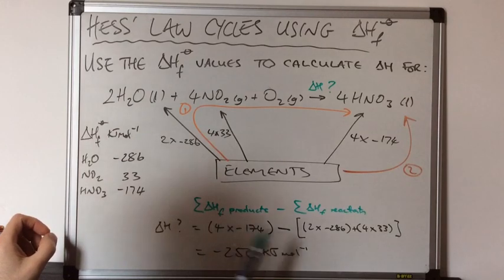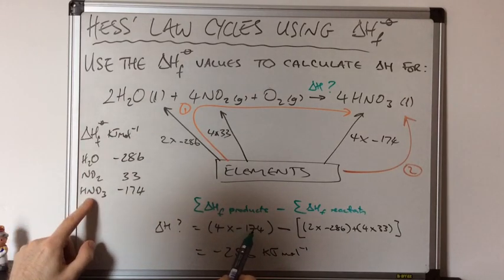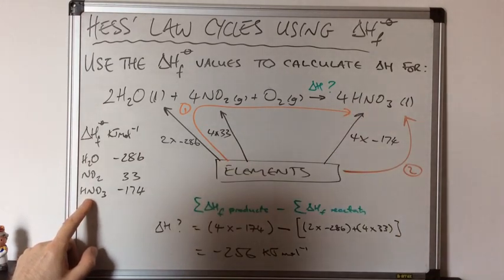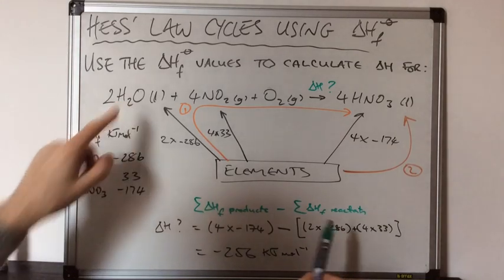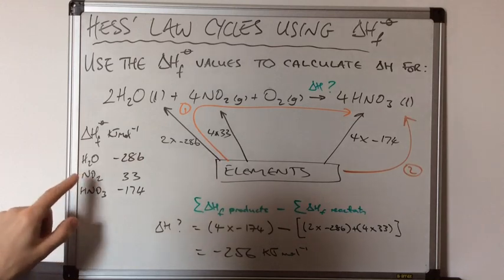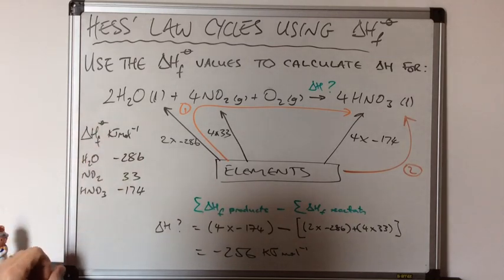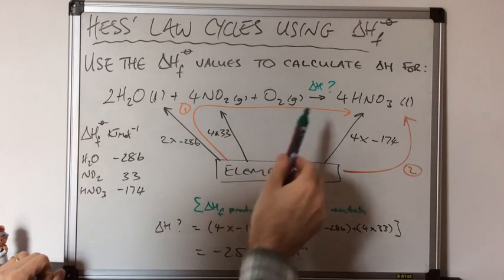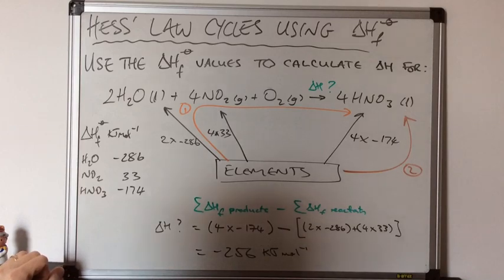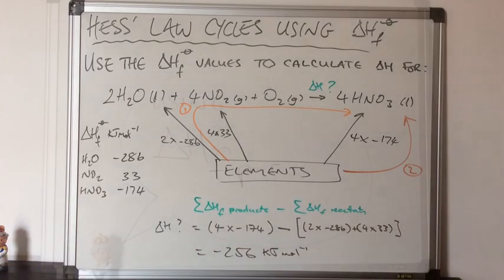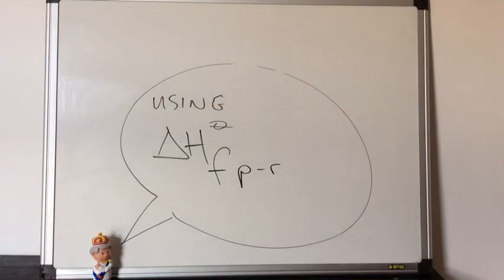The minus 174 is to do with nitric acid, HNO₃, which was the product — so this is the sum of the enthalpy changes of formation of the products. The minus 286 is to do with water and the 33 is to do with NO₂ — both reactants. So the formula is: the enthalpy change of the reaction using formation values equals the sum of enthalpy changes of formation of products minus the sum of enthalpy changes of formation of reactants — ΔH = ΔHf(products) minus ΔHf(reactants). This is the opposite way around to when you use enthalpy changes of combustion.